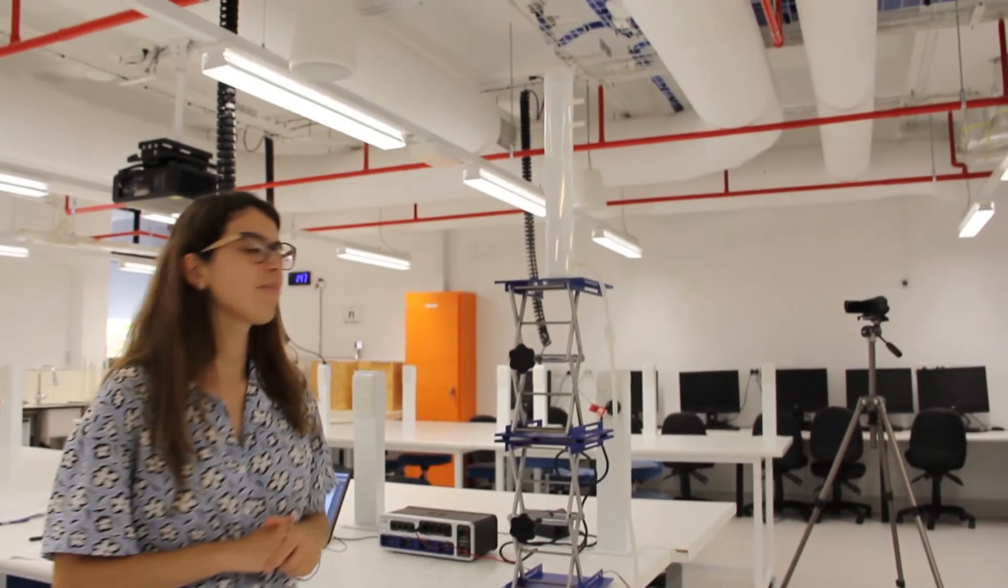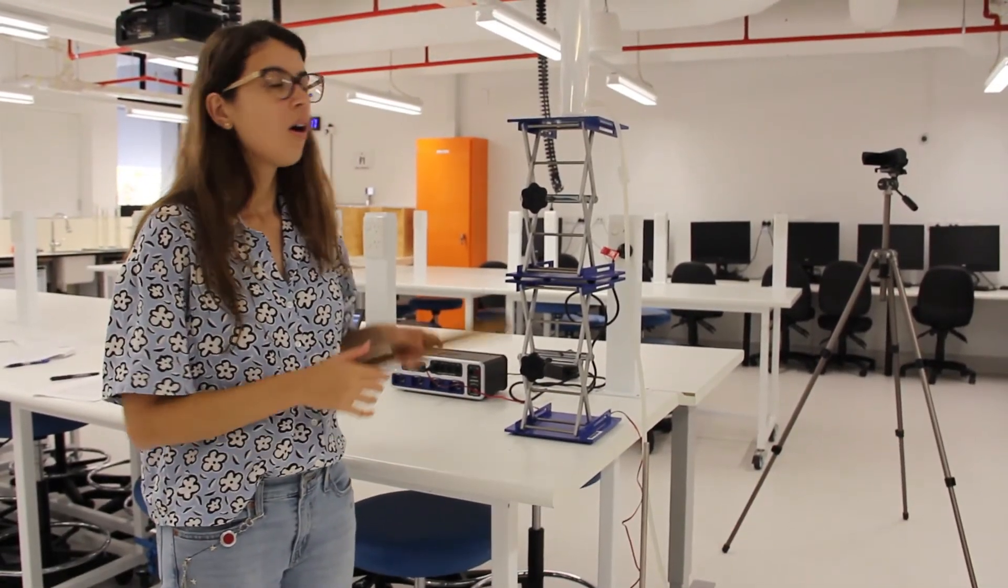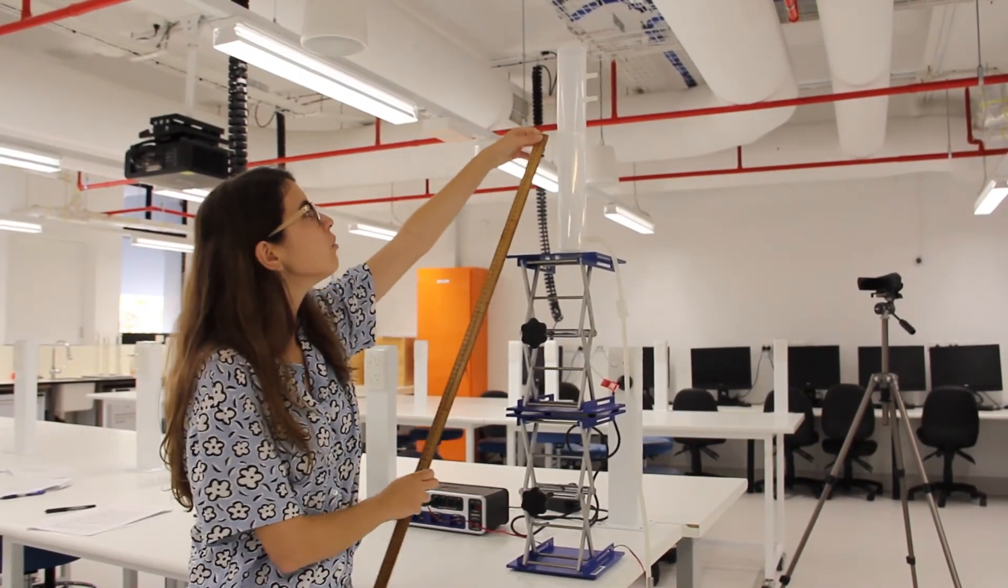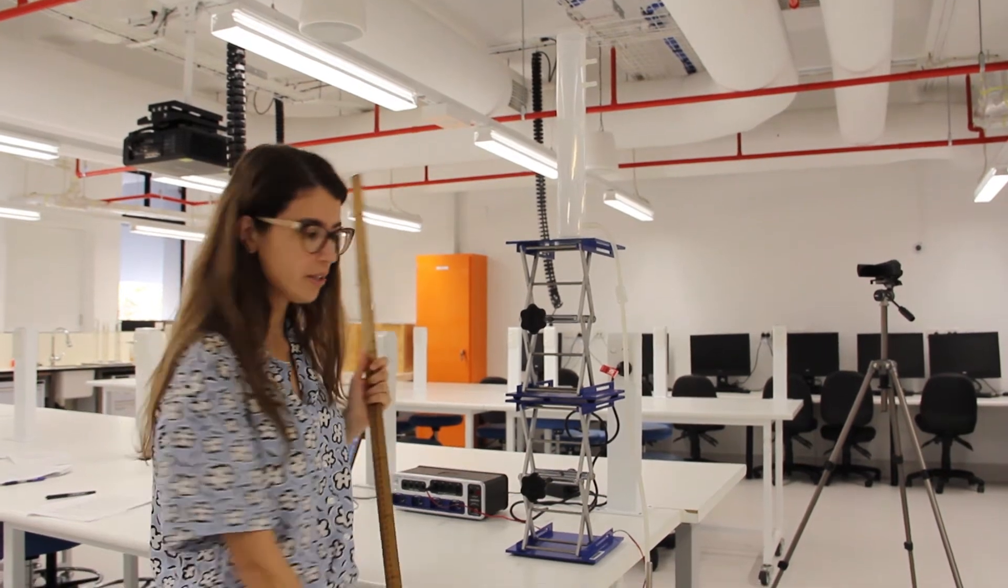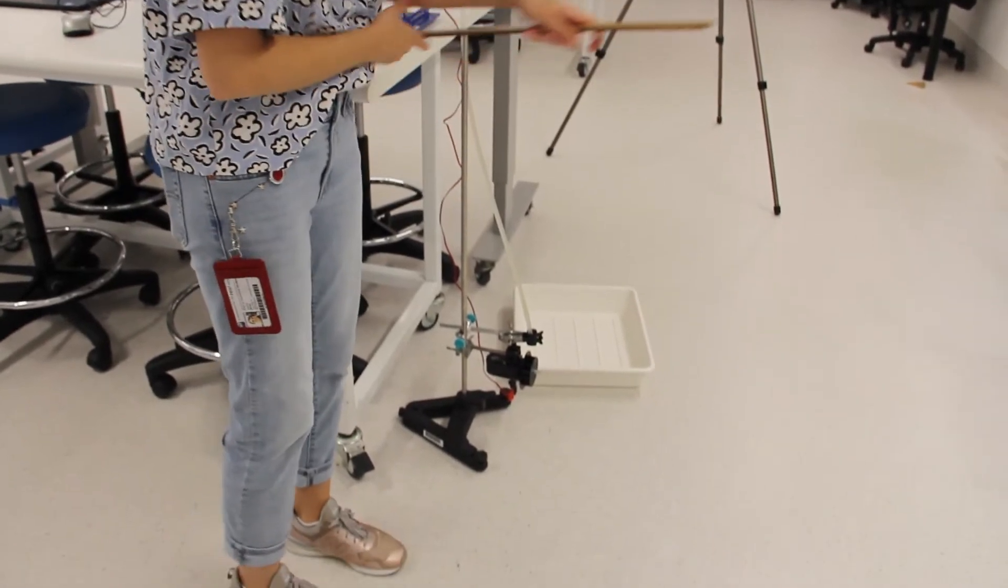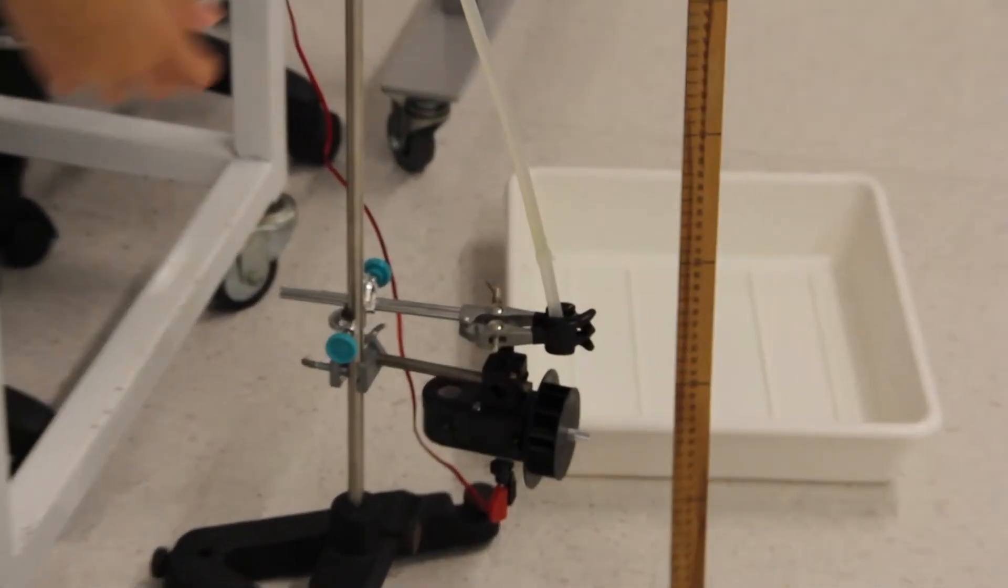Now I'm going to show you how we're going to set up for the PRAC. Before we start with the experiment, we need to get some parameters. The first thing we need to get is the radius of the cylinder. We also need to get the height of the maximum height of the water to the ground. Then we also need to get the height from the nozzle here to the ground.